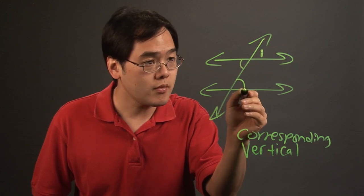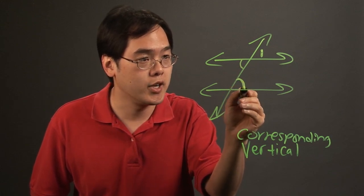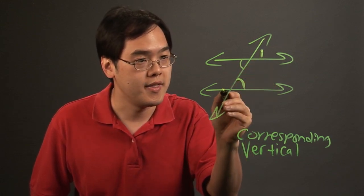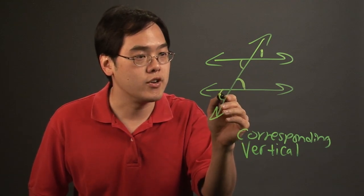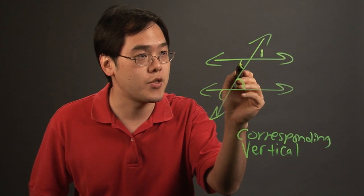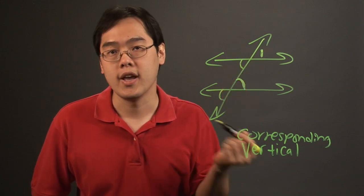And also, because we say that this corresponding angle is congruent to angle one, this angle will also be congruent to it. So basically, what you have here is one, two, in this illustration, three angles that are congruent to angle one.